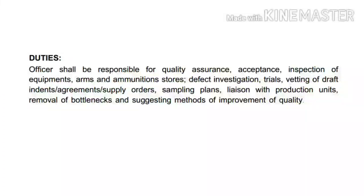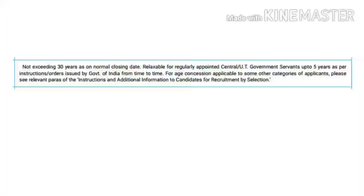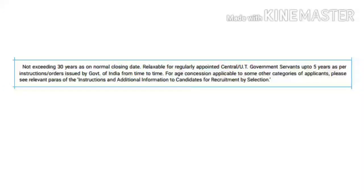The maximum age limit is 30 years. There is an age relaxation of 5 years for Central and Union Territory Government servants, as per the rules of the Government of India. For other age relaxation categories, candidates can go through the detailed notification.